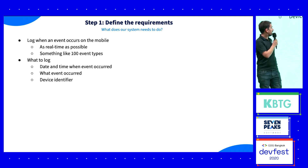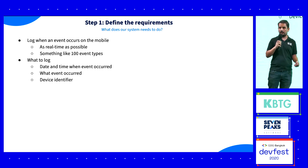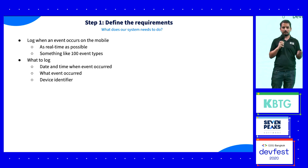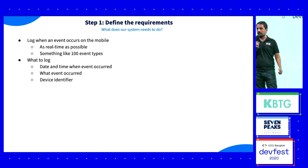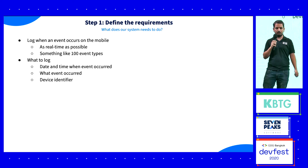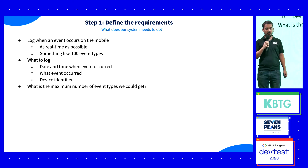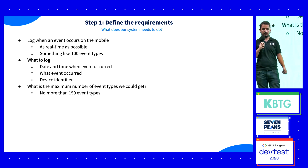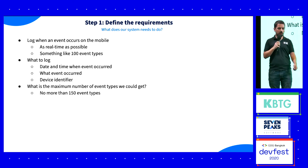Once you have done this, one important thing is to clarify ambiguity. For example, here we have something ambiguous: 'something like 100 event types.' What does 'something like' mean? You have to clarify it. We can say that we will never get more than 150 event types to log — whether it's a button press, visiting a screen, and so on.